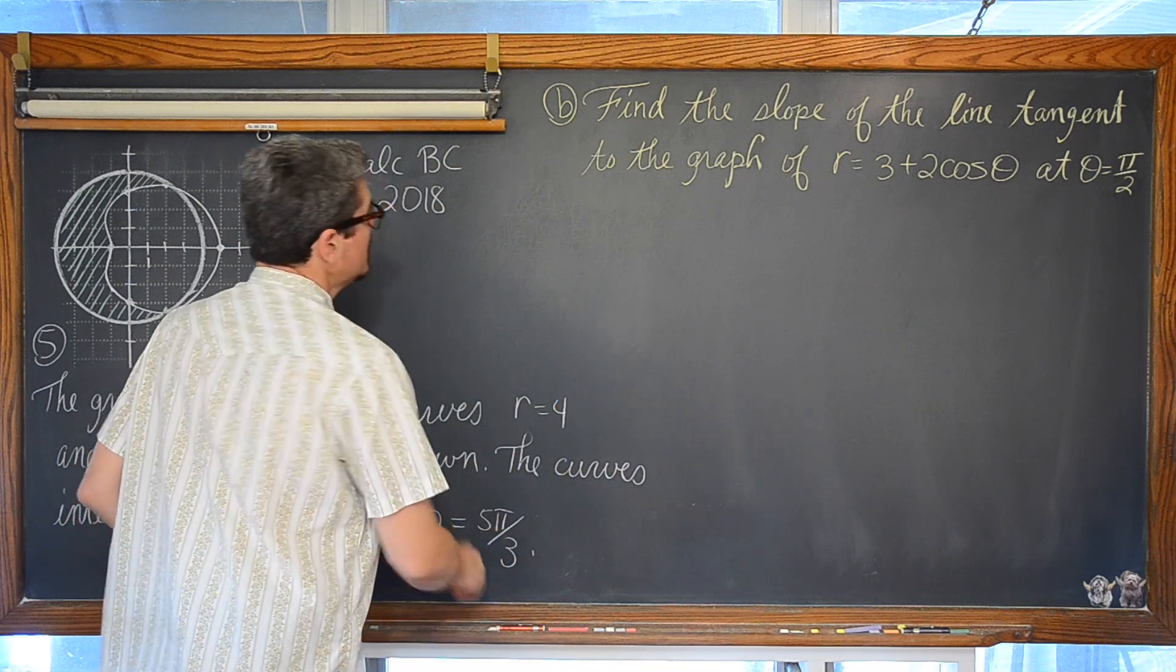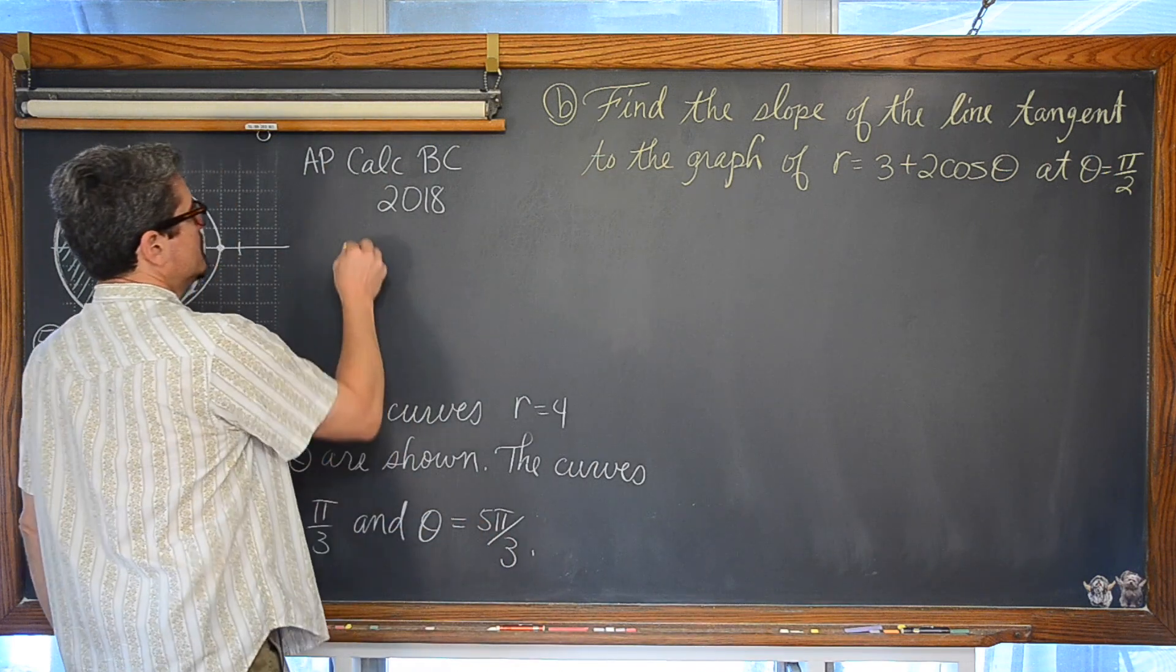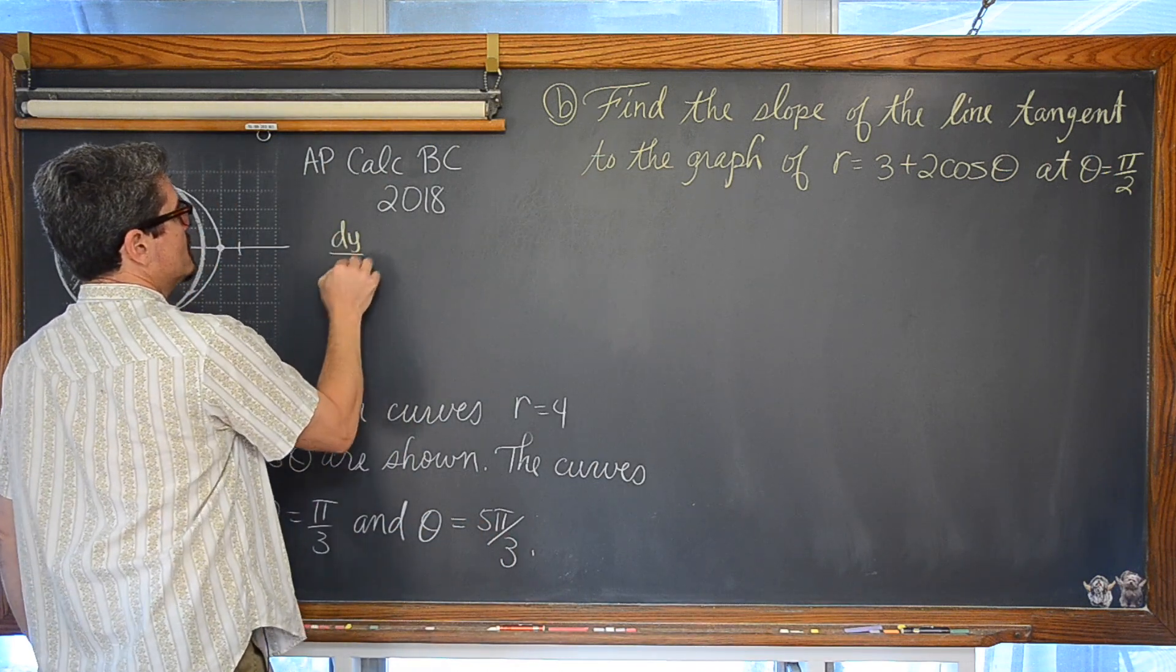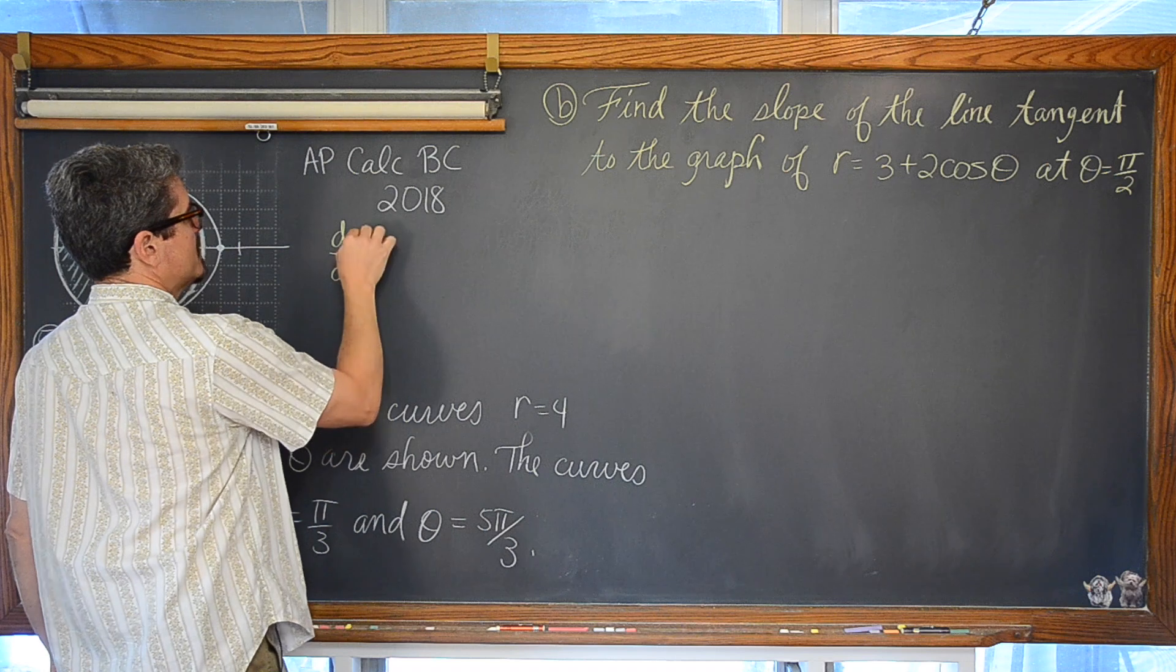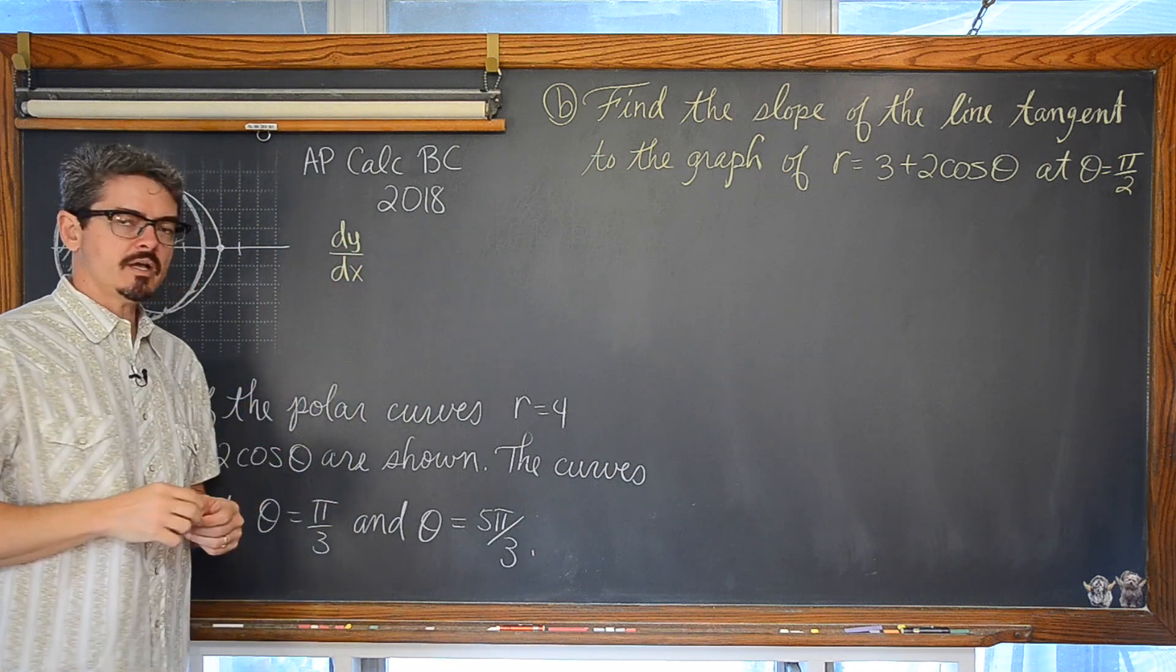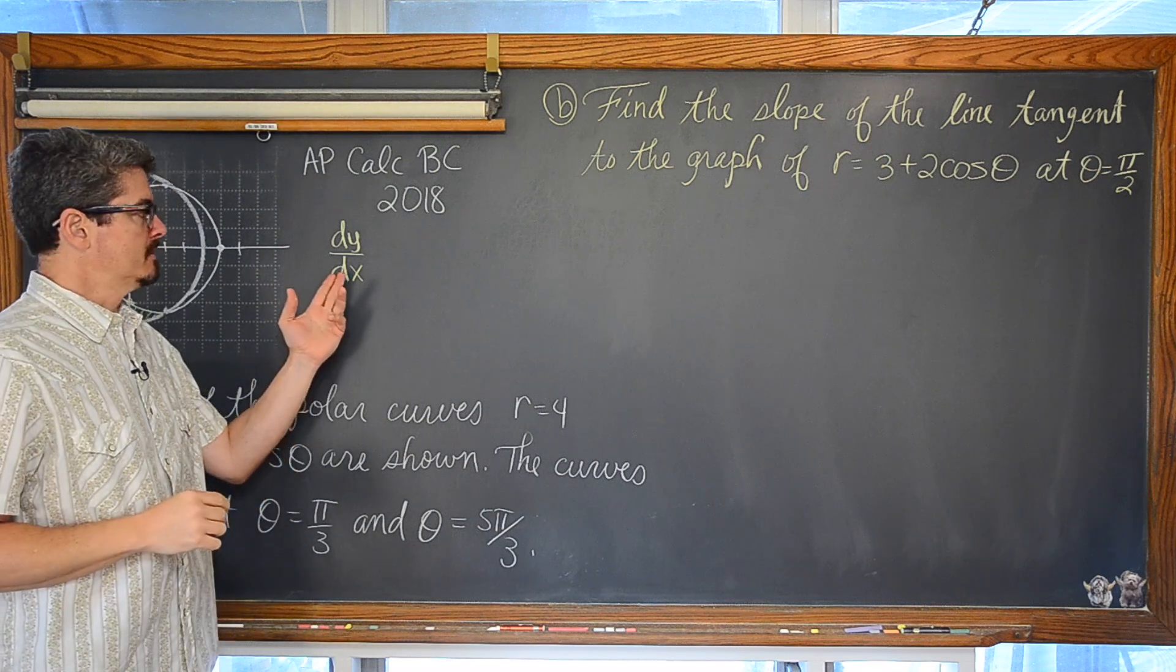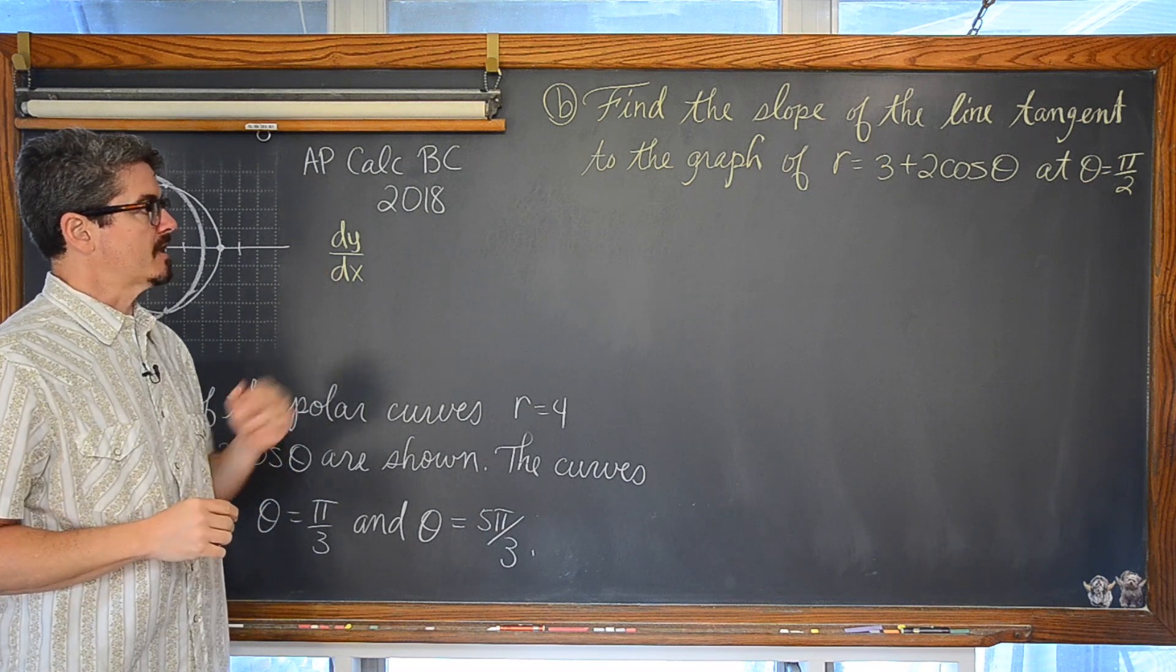We want to find the slope of this polar curve. Let's not forget that slope is a change of vertical direction over a change of horizontal direction, dy over dx. No mention of theta or taking a derivative with respect to theta in this notation.